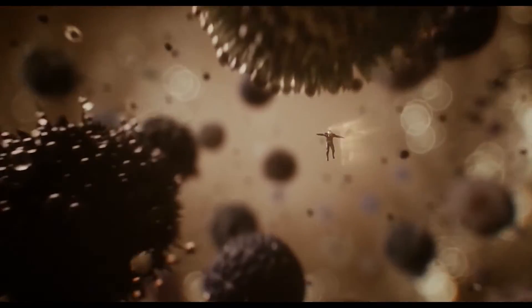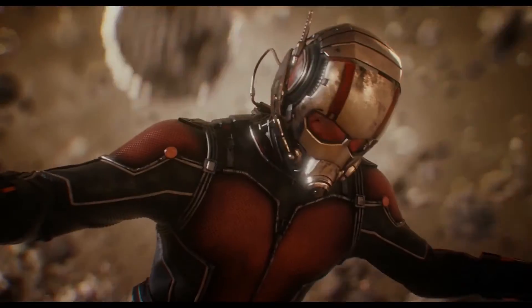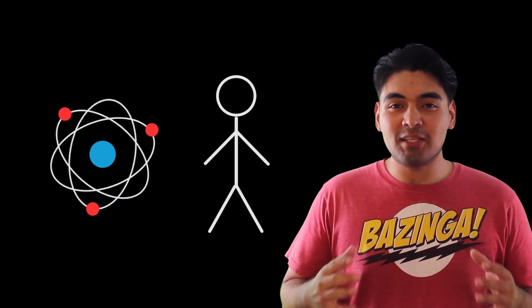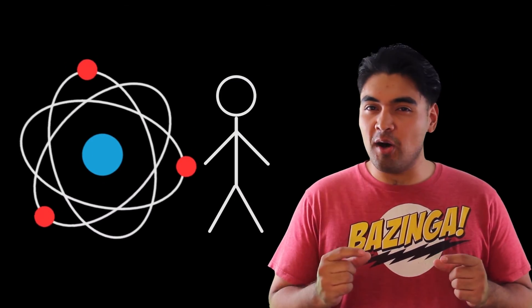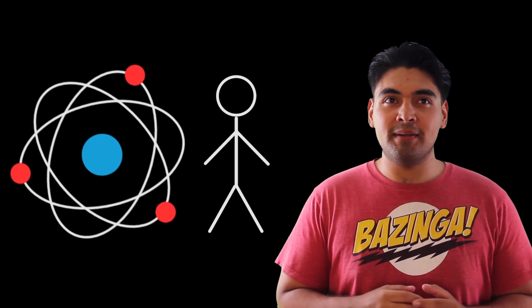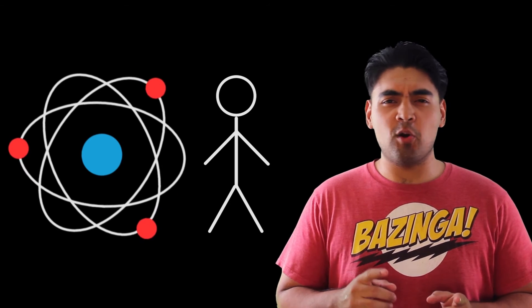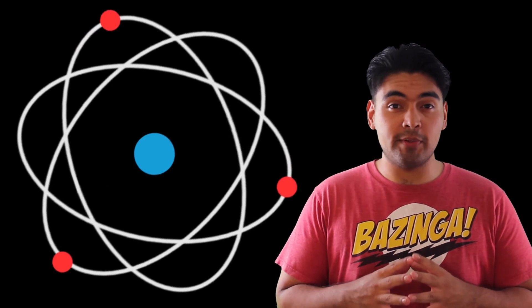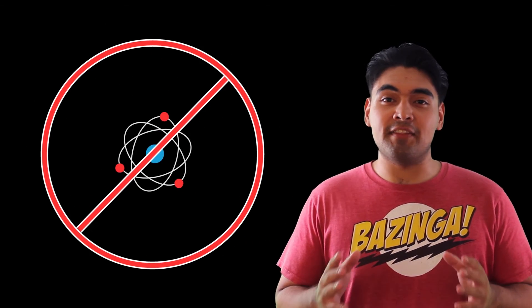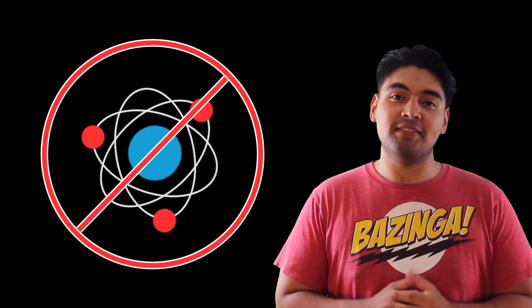My second grievance with the rules of the Pym Particles is their ability to make matter go subatomic. When Scott goes subatomic, it implies that he's smaller than the size of an atom. But according to one of the previous rules, Pym Particles can only change the distance between atoms, not the size of the atoms or the molecules themselves.